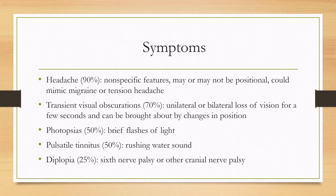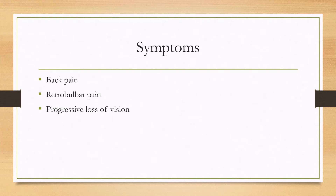Photopsias can happen as well — these are brief flashes of light. Pulsatile tinnitus can occur, and patients typically describe this as hearing the sound of rushing water. Diplopia can happen, which can be from a sixth nerve palsy — the most common nerve palsy — or from other cranial nerve palsies. Some other common symptoms include back pain and retrobulbar pain.